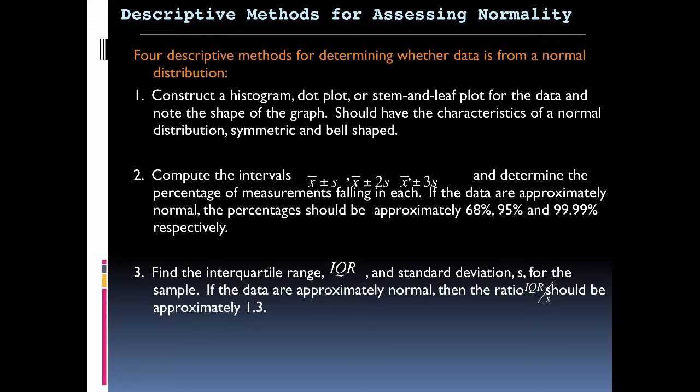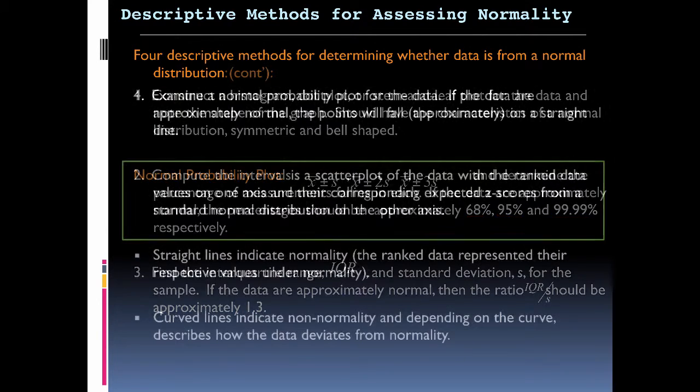We're going to compute the intervals for each of the three different standard deviations and then determine a percentage. For the first one, we want to see 68% between plus or minus one standard deviation. For two, we're looking at 95%, and then inside plus or minus three, we're looking for almost everything to fall in place there. Then we're going to look at the interquartile range or the IQR and standard deviations for the sample.